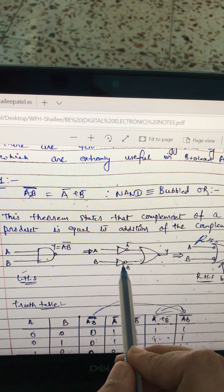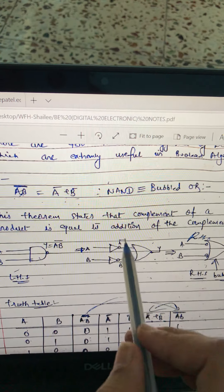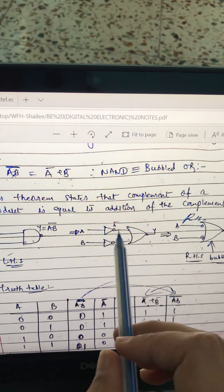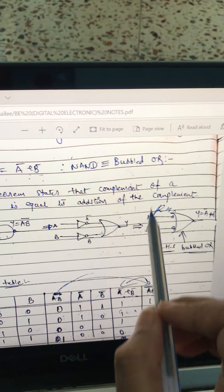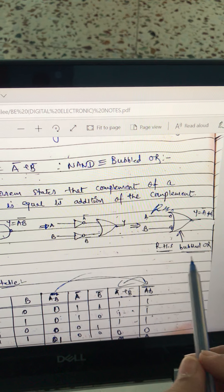So you put A bar and B bar here. Then addition of them. So it is OR gate. Now these two bubbles put at a starting point. And this simplified gate is known as bubbled OR.